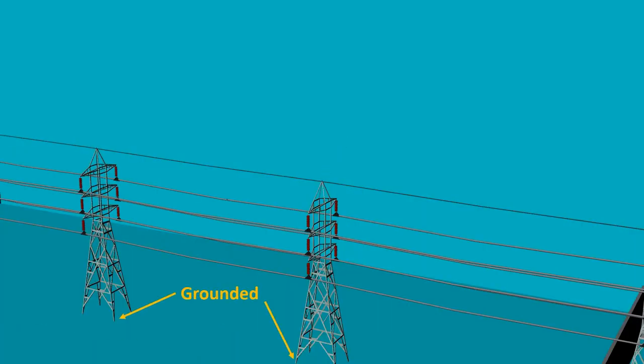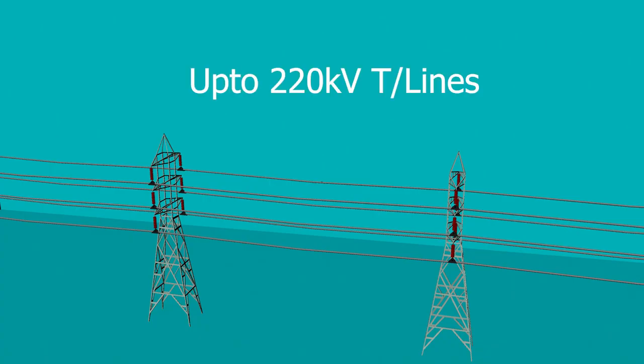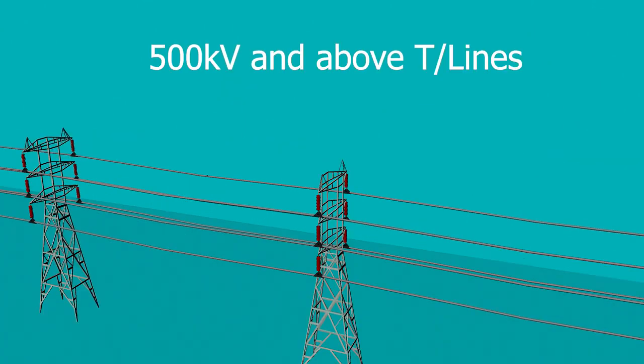Unlike the phase conductors that are isolated from the tower through disc insulators, the earth wire is connected to each tower of the transmission line and each tower is properly grounded using earth rods of specifications as per international standards.